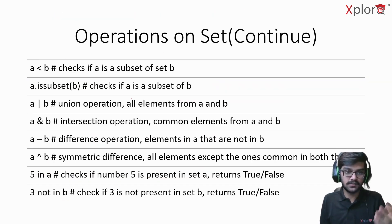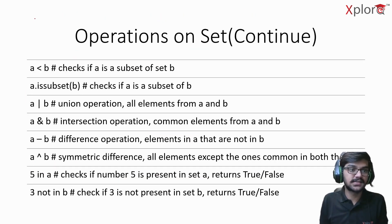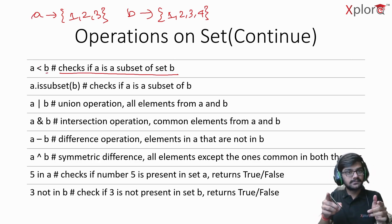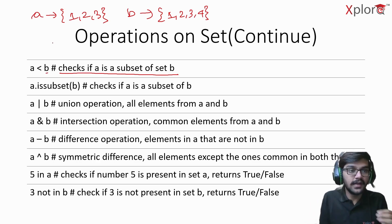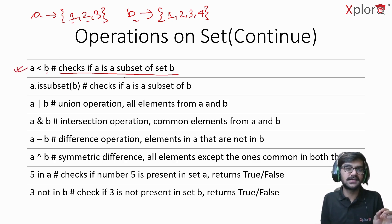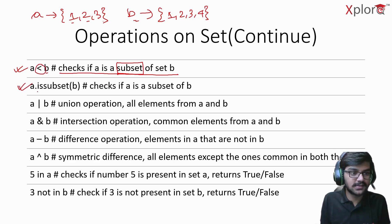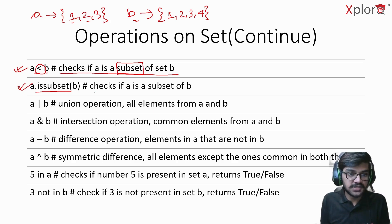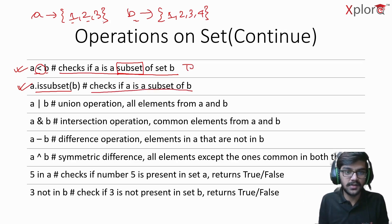Moving on, 'a < b' checks if a is a subset of b. If A is {1, 2, 3} and B is {1, 2, 3, 4}, then a < b returns True because all elements of A are present in B — indirectly meaning B is a superset of A. There's also the dot issubset() method: 'a.issubset(b)' checks the same thing, analogous to how issuperset() corresponds to the greater-than operator. Both return True here.